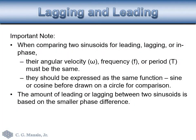Important notes when comparing sinusoids in terms of leading or lagging: their angular velocity must be the same, meaning they have the same frequency or period. If we compare them on a circle, they must be expressed as the same function — either both sine or both cosine. The amount of leading or lagging between the two sinusoids will always be the smaller phase difference.